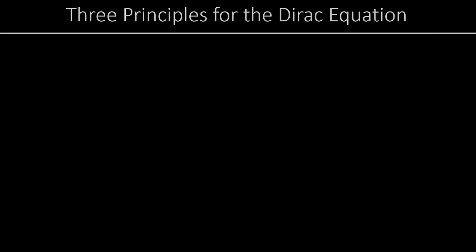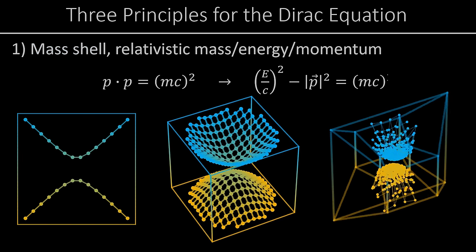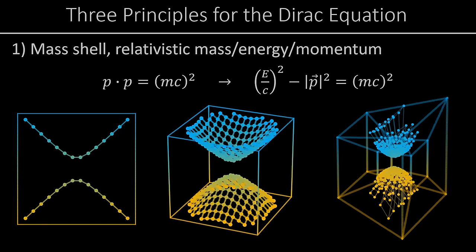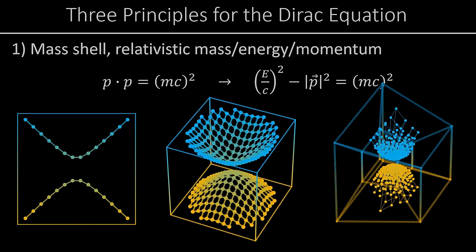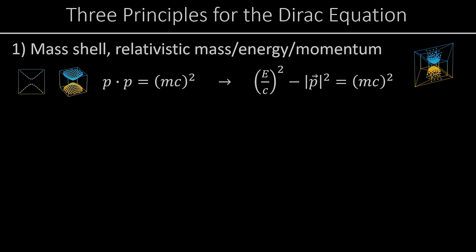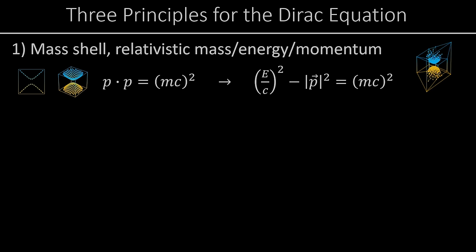Let's put on our chef's hats and cook up an equation. The first ingredient is the mass shell. The essence of the mass shell is that the four-momentum of a particle dotted with itself always has magnitude mc squared, regardless of the inertial reference frame. Splitting the four-momentum in terms of energy and momentum and applying the Minkowski metric, we get: (E/c)² minus the magnitude of the three-momentum squared equals (mc)². That is the equation we'll work with for the mass shell.